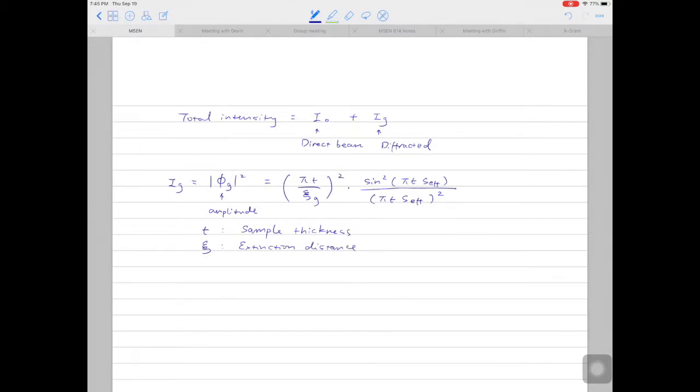You will see why it is called extinction distance pretty soon. And ccg can be mathematically expressed as pi v cos theta b divided by lambda fg. V is the volume of the unit cell.